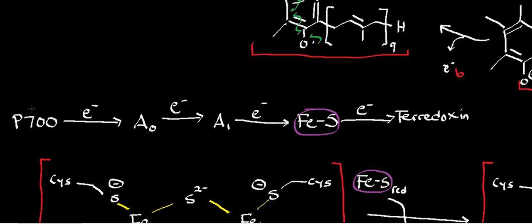P700 gets excited and donates an electron to A sub-zero, which donates an electron to A sub-one, and receives another electron, reducing A sub-one into totally reduced phyloquinone. Phyloquinone then transfers one electron at a time through a series of iron-sulfur centers, which in turn transfer electrons one at a time to ferredoxin.